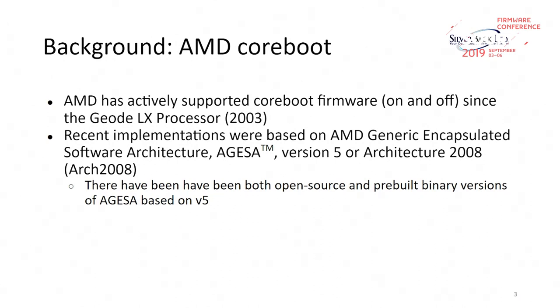One of the things that's come up is AMD's reference code called AGESA — AMD's Generic Encapsulated Software Architecture. There's a test later. All of the CoreBoot support except for the Geode LX is based on something called Architecture 2008 or version 5. This new processor is based on version 9, which came out with the Zen cores, and that's presented some challenges. They actually had open source versions of AGESA version 5 back in the 2011–2012 timeframe for a couple of processor generations, so you can go look at that source code. But they are now in a binary mode, like Intel is today.